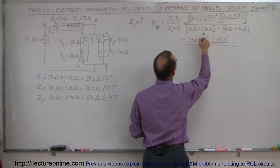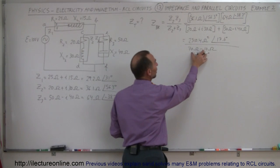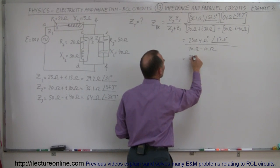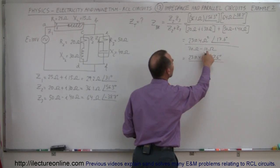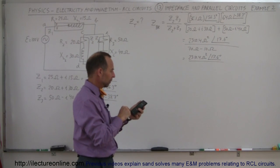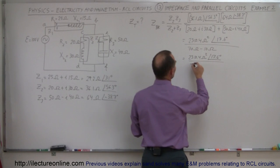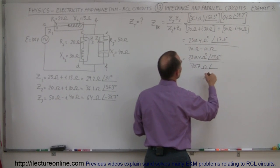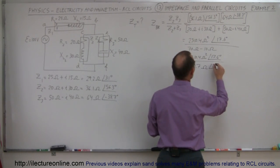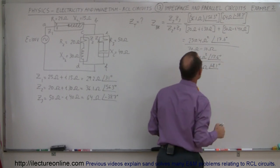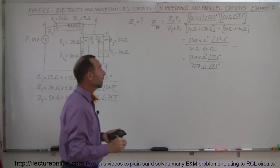For the denominator, we use complex number format: (20 + j30) plus (50 − j40). Adding real parts: 20 plus 50 is 70 ohms. Adding imaginary parts: 30 minus 40 is minus 10 ohms. Converting to magnitude-phase angle form: square root of 70 squared plus 10 squared equals square root of 5000, which is 70.7 ohms. The phase angle is arc tangent of 10 divided by 70, giving 8.1 degrees — negative because we have minus 10, so minus 8.1 degrees.